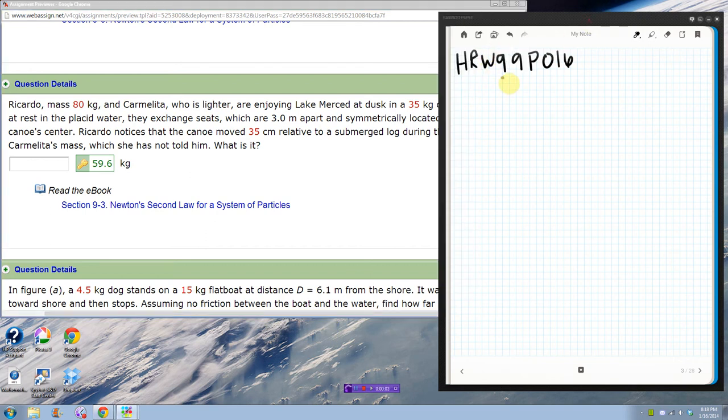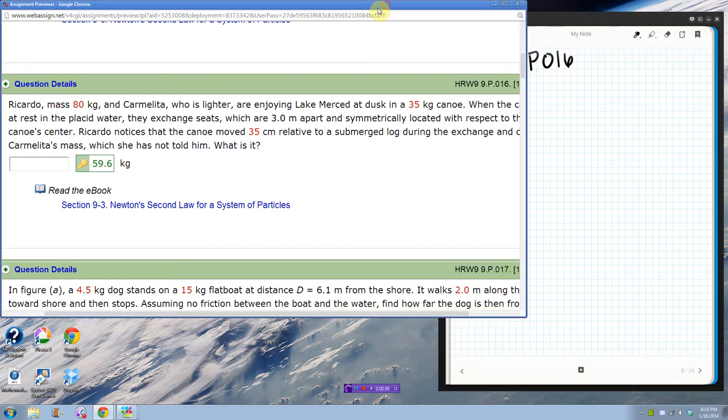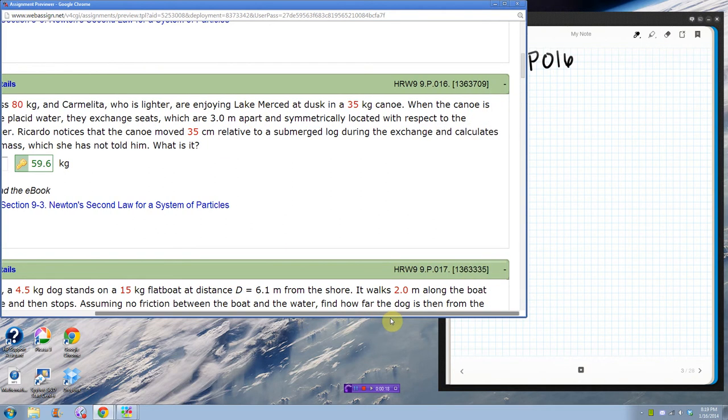This is HRW99P016. This is the two people on the canoe, Ricardo, we've got a mass for him, and Carmelita, who is lighter but doesn't give her mass, are enjoying a Lake Merced dusk in a 35 kilogram canoe.